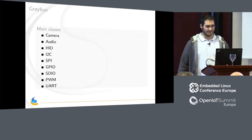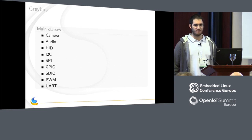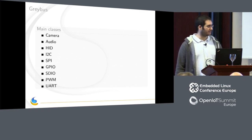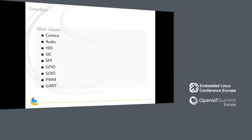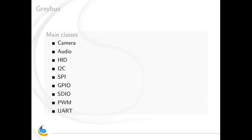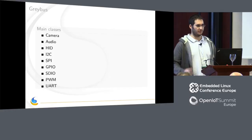Here is a list of protocols and classes supported by Greybus. For IoT, I think the most interesting classes are probably GPIO, SPI, and I2C — very common buses used in IoT — and UART also. What is interesting about these classes is that when you insert a module, Greybus will do everything. If you insert a module with SPI protocol, Greybus will automatically create an SPI controller. After that, you don't have to do anything except use the SPI controller.